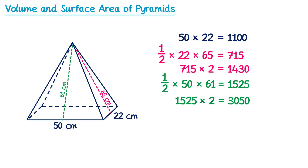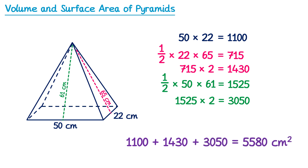So we now have the area of the rectangular base, 1100, the two triangular faces at the sides, 1430, and the triangular faces at the front and the back, 3050. Adding all of this together gives the total surface area of 5580 centimetres squared.